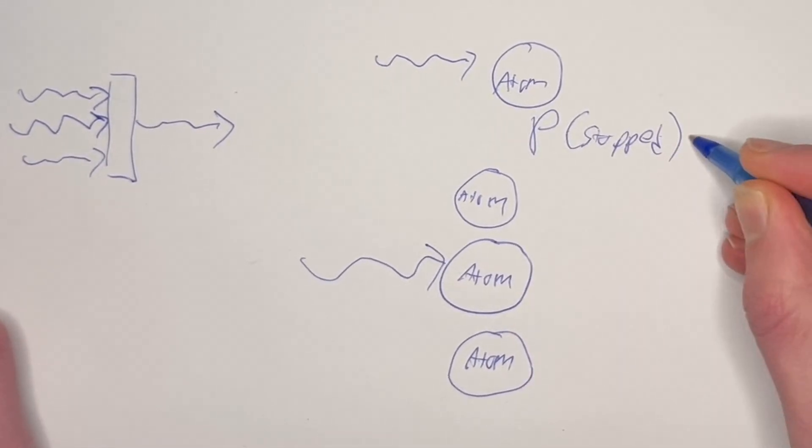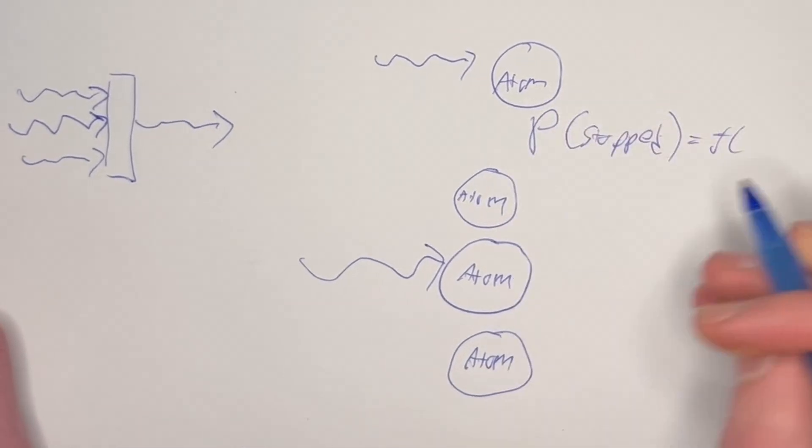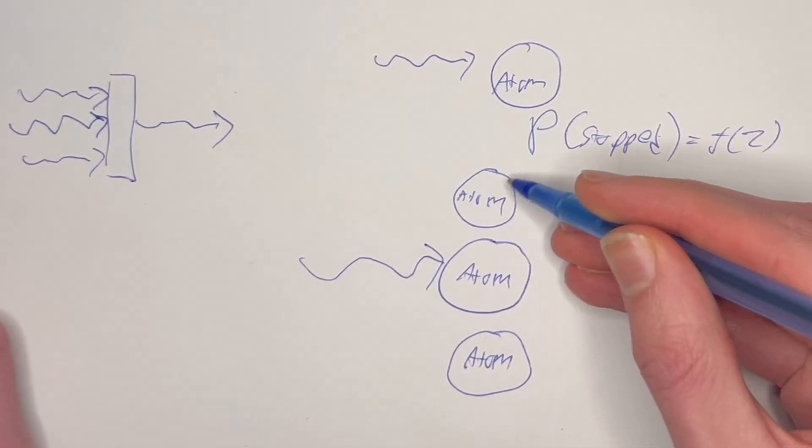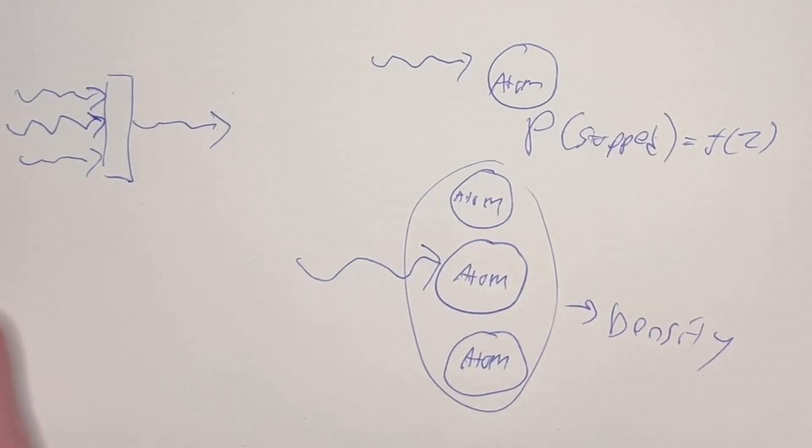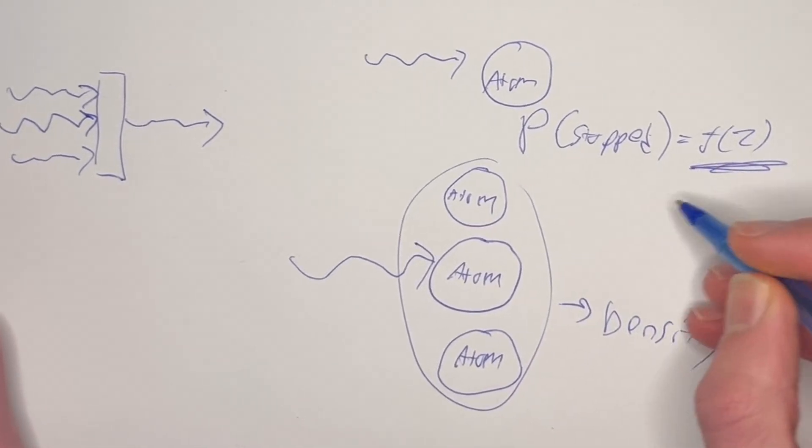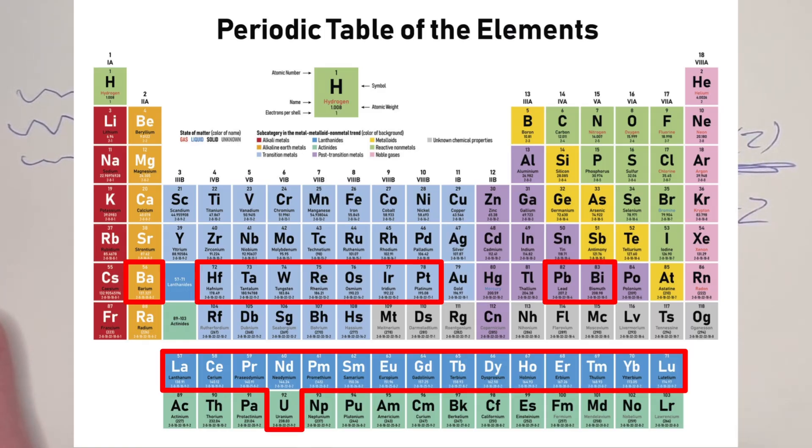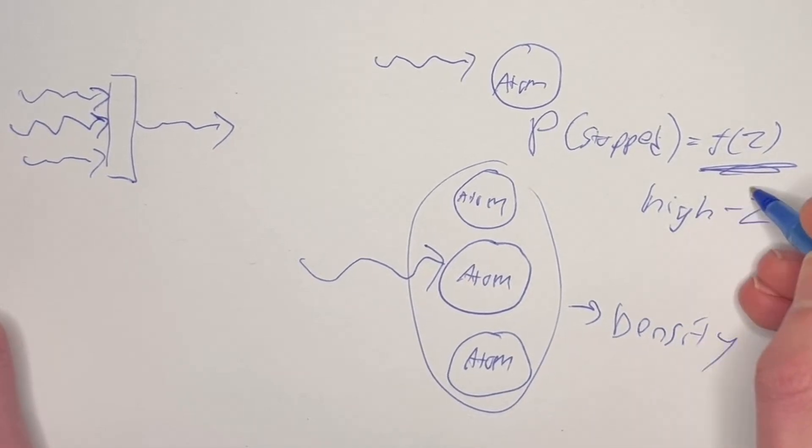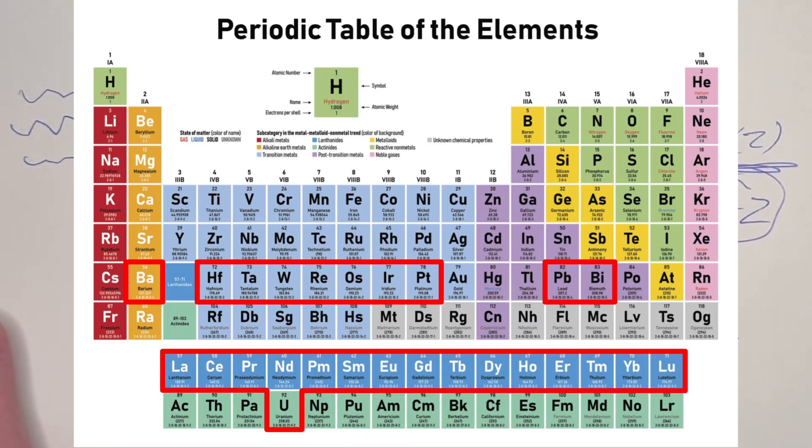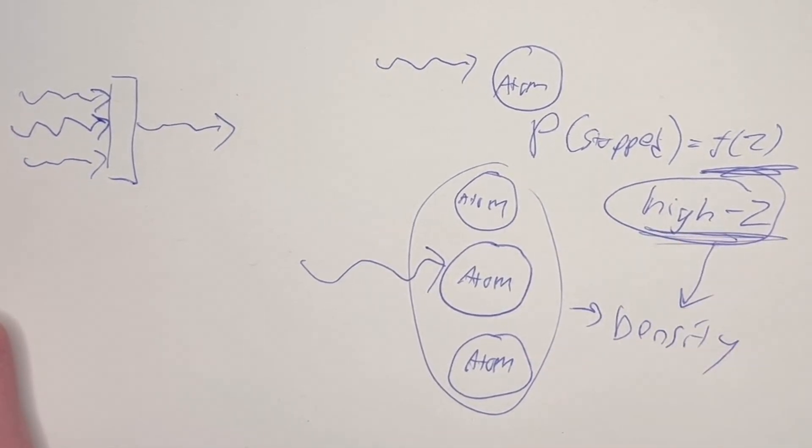That is going to depend primarily on the atomic number of the atom. We want lots of atoms which corresponds to density so we want very dense materials, and we also want materials with a very high atomic number so those at the end of the periodic table. It turns out thankfully that a lot of high Z materials also are very dense so this is the main criteria that we want to work on.